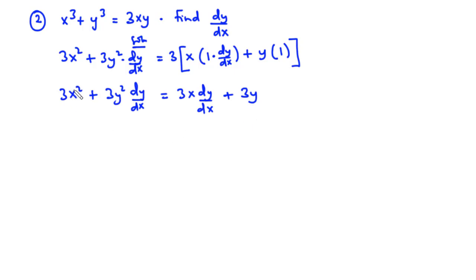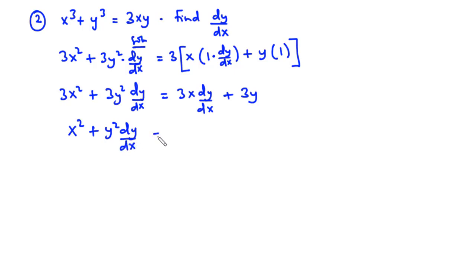Because each term is multiplied by 3 we can cancel out the 3 for each term, so we can simplify the expression to: x squared plus y squared dy/dx equals x dy/dx plus y. Now because we want to find dy/dx we are going to group terms containing dy/dx on one side.